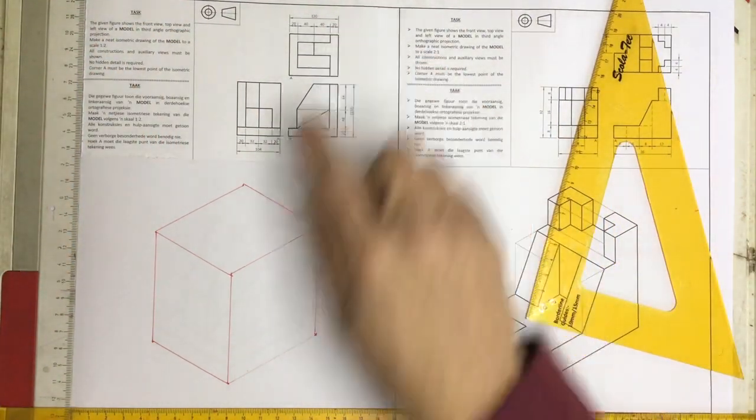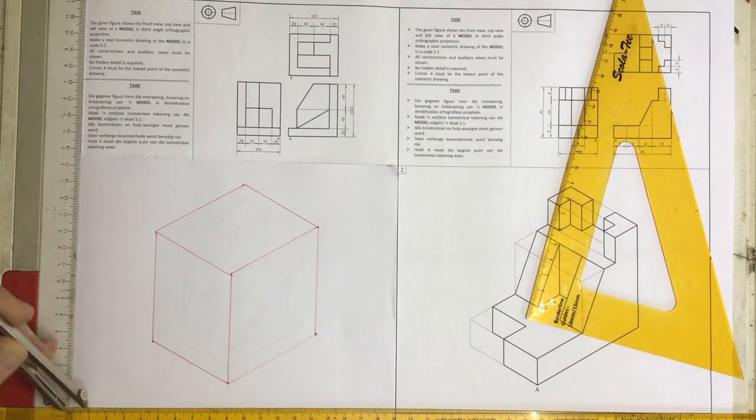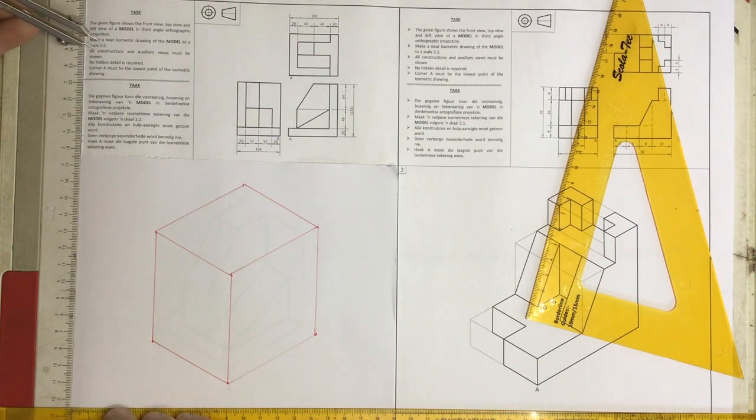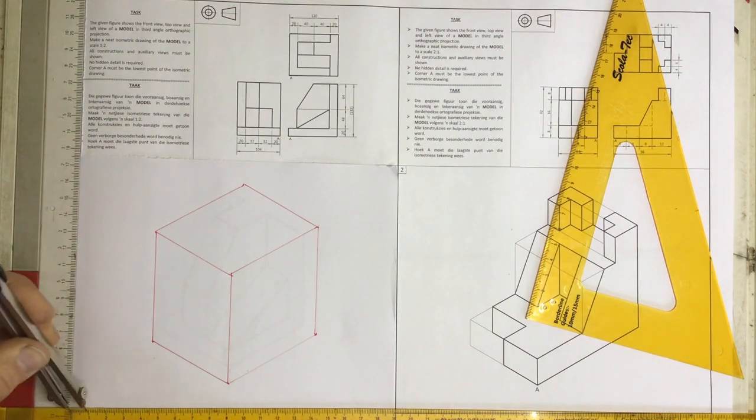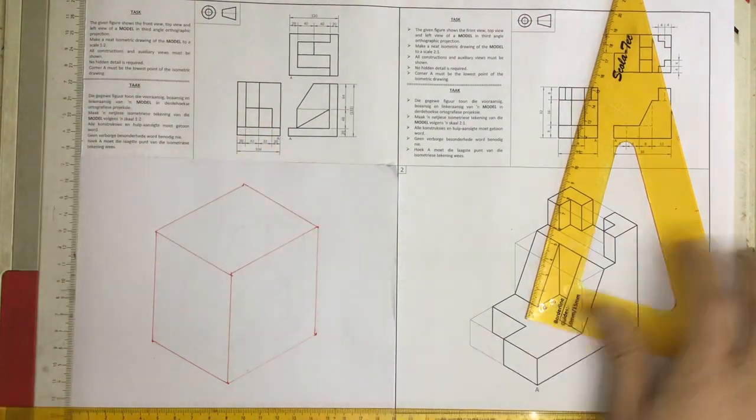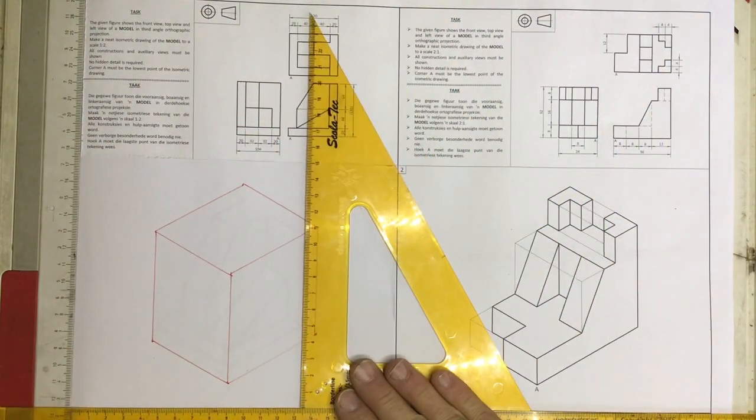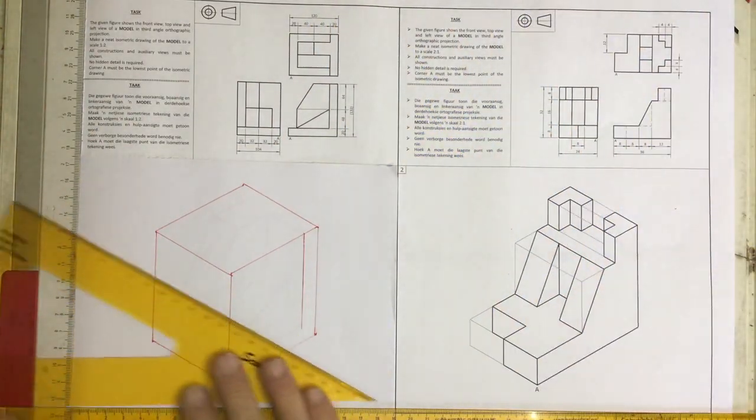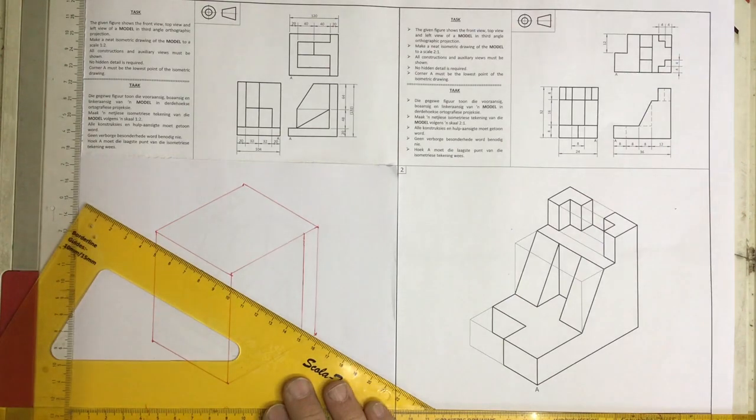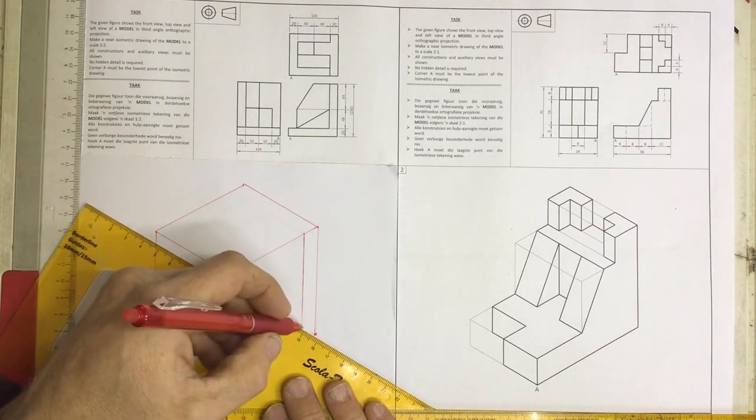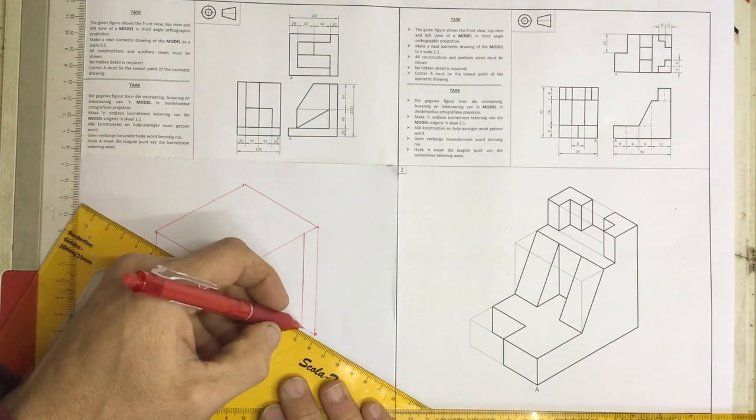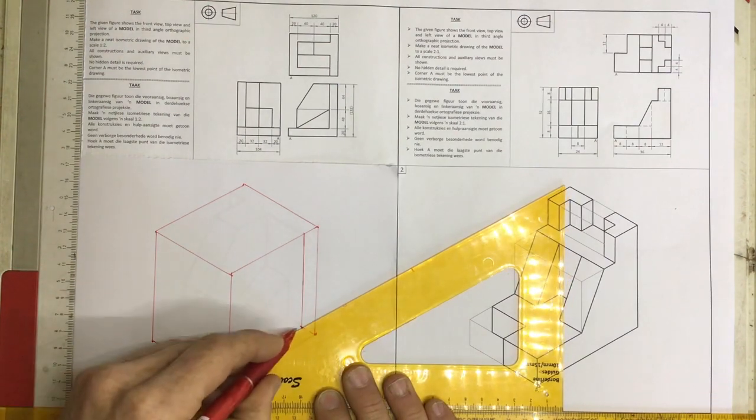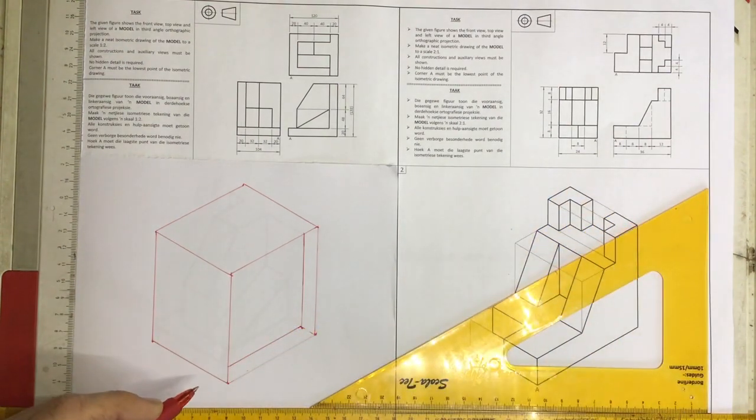They tell you it's 20 millimeters, but it's a scale 1:2, so it's 10 millimeters. I measure off 10 millimeters and draw a construction line coming down. If I'm clever, I can make a mark from that corner coming across. This distance from the base will also be 10 millimeters, which saves time measuring. Note that idea.